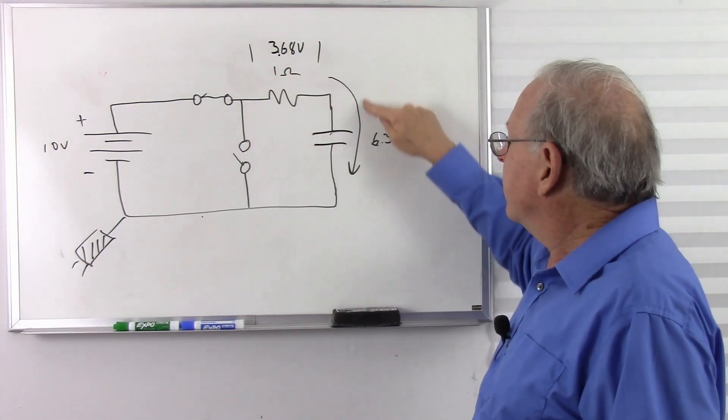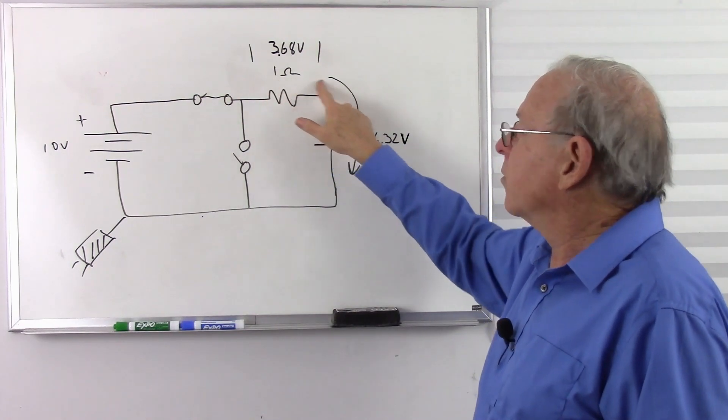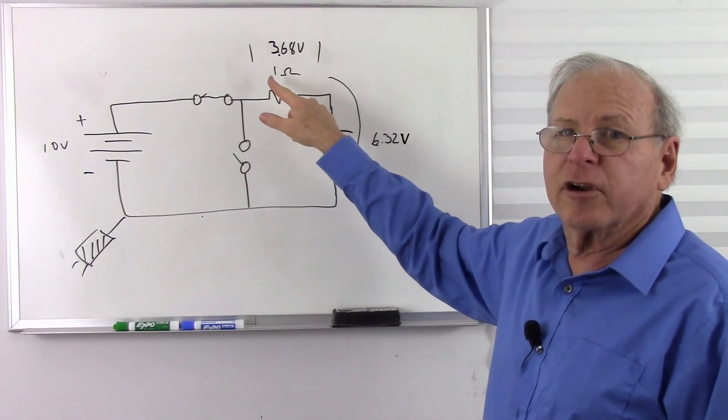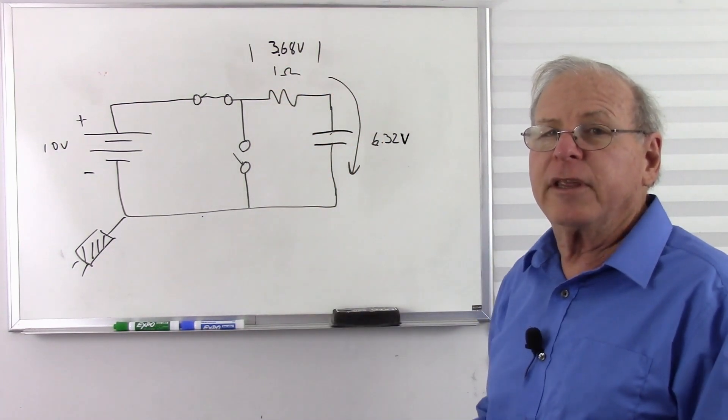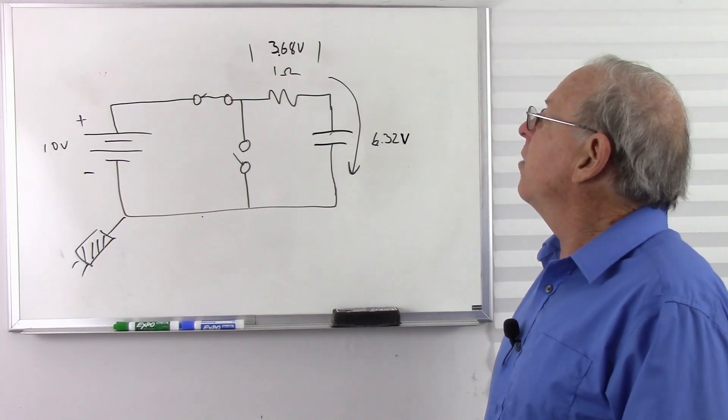So at this point here, I have current flowing through the capacitor. Therefore, it's flowing through this resistor. It's a series circuit. Whatever current goes into one must go into the other. And so how much current do I have?